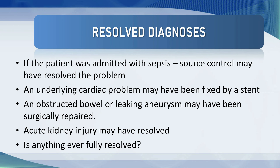Finally, you also need to mention resolved problems, because nothing is ever truly resolved — there's often some lingering organ dysfunction. If the patient was admitted with sepsis, source control may have resolved the problem. An underlying cardiac issue may have been fixed by a stent. An obstructed bowel or a leaking aneurysm may have been surgically repaired. But you need to know that they've had surgery — you think you're treating a patient for pneumonia and then you pull back the gown and there's a big incision there. Acute kidney injury may be resolved, but there may be lingering renal damage. Don't believe for a second that someone who was on continuous kidney replacement therapy last week has normal GFR this week just because they're making urine and clearing creatinine.